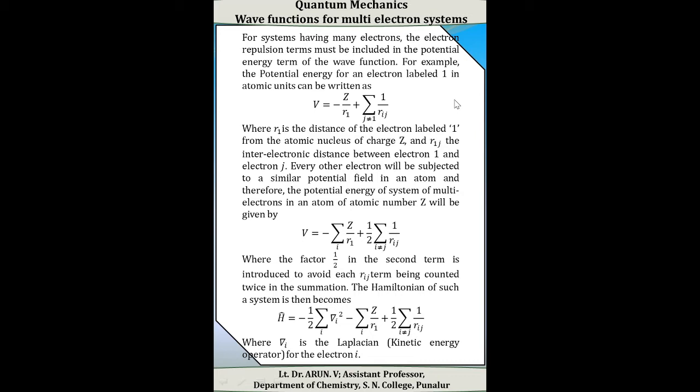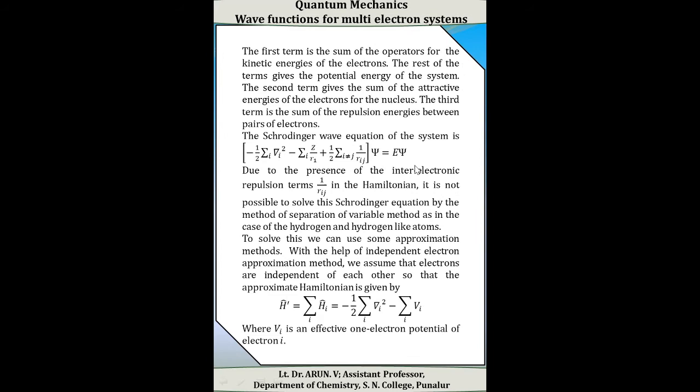The factor one-half in the second term is introduced to avoid each Rij term being counted twice in the summation. The Hamiltonian of such a system can be written as H-cap equal to minus one-half sigma_i del_i squared minus sigma_i Z by Ri plus one-half sigma (i≠j) 1 by Rij, where del_i is the Laplacian, the kinetic energy operator for electron i. The first term is the sum of kinetic energy operators. The second term gives the attractive energies of the electrons for the nucleus, and the third term is the sum of repulsion energies between pairs of electrons.